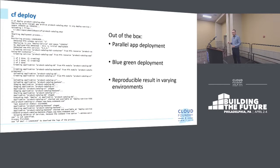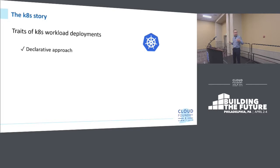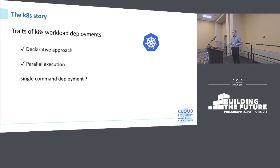Let's see how things look in the land of Kubernetes. What are the traits of Kubernetes deployments? Does it have the declarative approach? Pretty much out of the box — Kubernetes supports declarative expressions for all of its entities. Is there parallel execution? Since platform entities are created asynchronously, more or less yes. Is there a single command deployment? One can argue that 'kubectl apply' with a directory does the same thing, and there is already Helm in the community combining all descriptors into a single entity — the Helm chart.